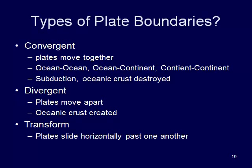At divergent plate boundaries, plates move away from each other — this is where we have oceanic crust created, like we talked about with the magnetic reversals and polarity of the ocean crust. And then at transform plate boundaries, the plates slide horizontally past one another.